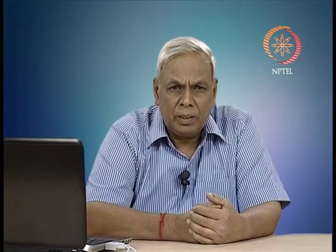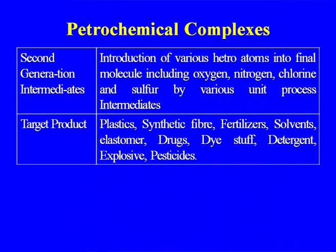Petrochemical complexes are categorized by generations. First generation chemicals include hydrogen, methanol, olefins, hydrocarbons, propylene, isoprene, aromatics, benzene, ammonia, ethylene, and butadiene. Second generation intermediates involve introduction of heteroatoms into the molecule — including oxygen, nitrogen, chlorine, and sulphur — through various unit processes. Target products (third generation) include plastics, synthetic fiber, fertilizer, solvents, elastomers, drugs, dyestuffs, detergents, explosives, and pesticides.